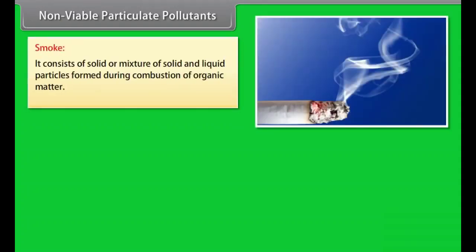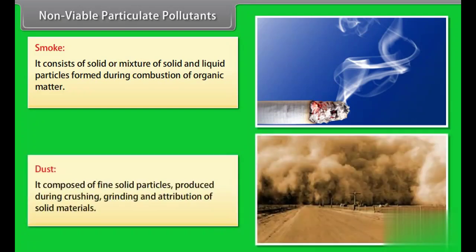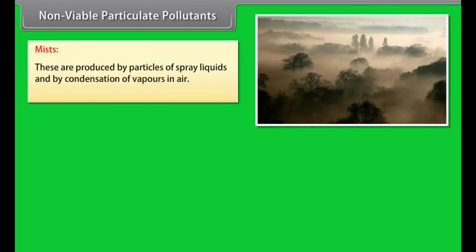Non-viable particulate pollutants. Smoke: It consists of solid or mixture of solid and liquid particles formed during combustion of organic matter, for example, cigarette smoke, smoke from burning of fossil fuel, oil smoke, etc. Dust: Composed of fine solid particles produced during crushing, grinding, and attrition of solid materials, for example, dust from woodworks, pulverized coal, fly ash from factories, dust storms, etc. Mists: Produced by particles of spray liquids and by condensation of vapors in air, for example, sulfuric acid mist, herbicides, and insecticides.